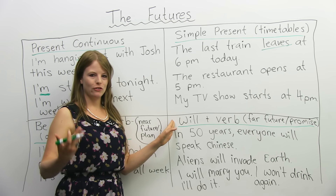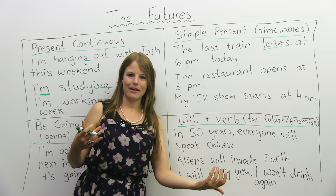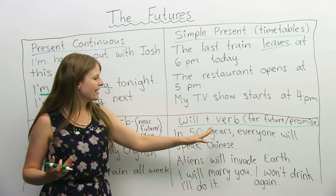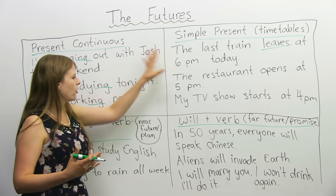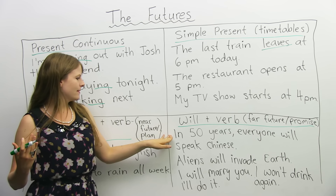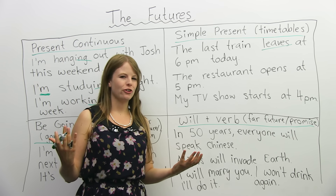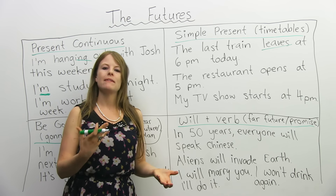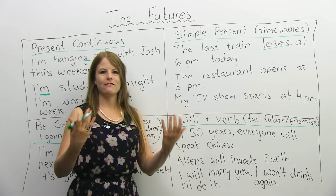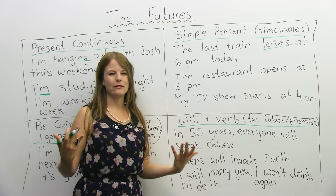Will is a bit different. We use will plus a verb — for example, I will always love you, I will study hard, I will do my taxes on time. We use will first of all for the far future, whereas be going to is for soon. For example, 'In 50 years, everyone will speak Chinese.' We also use will when we're not so sure about something — it's a prediction but we don't have much evidence. If I'm very sure and have evidence, I use be going to; if I'm not very sure and there's not much evidence, I use will.